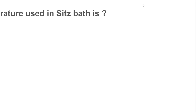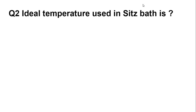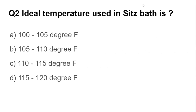Question number two: the ideal temperature used in a sitz bath. The ideal temperature for a sitz bath is about 105 to 110 degrees Fahrenheit. A sitz bath reduces inflammation, improves hygiene, and promotes blood flow. We use the sitz bath after delivery.